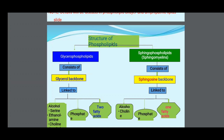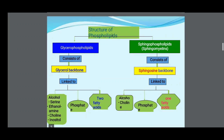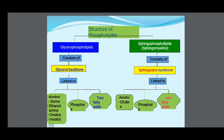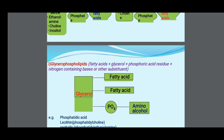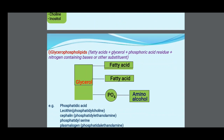Glycerophospholipids consist of glycerol linked to alcohols such as serine, ethanolamine, choline, or inositol, plus phosphate and fatty acids. Sphingophospholipids (sphingomyelins) consist of a sphingosine backbone linked to alcohol such as choline, phosphate, and fatty acids. Glycerophospholipids = fatty acids + glycerol + phosphoric acid residue + nitrogen-containing bases or other substituents.